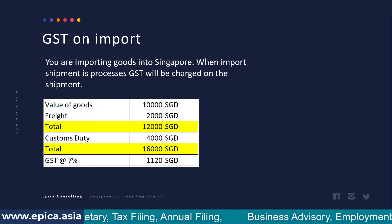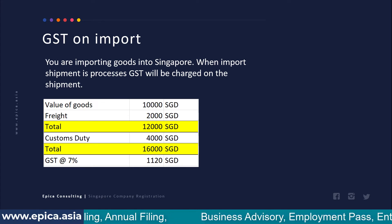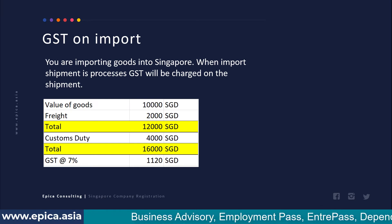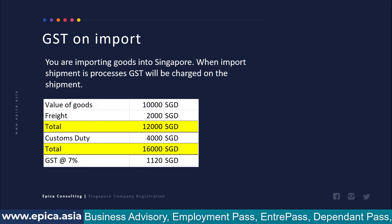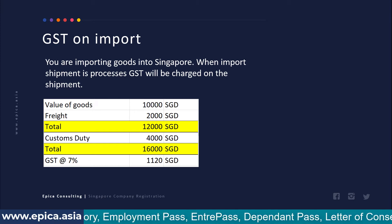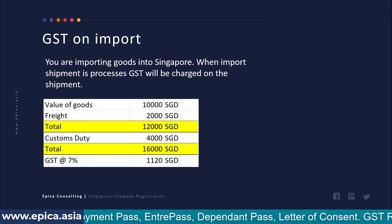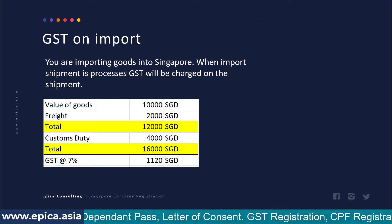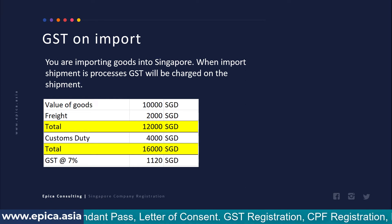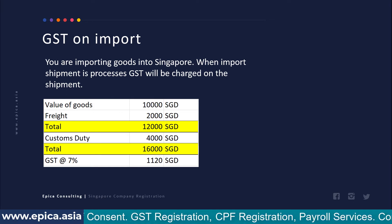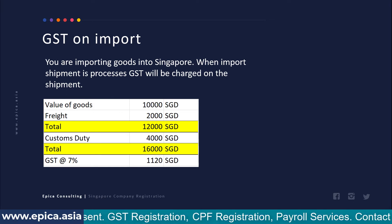GST is calculated on value plus freight plus customs plus insurance and any other direct expenses prior to landing of the goods. In most circumstances the logistics service provider you appoint will pay this GST on your behalf and then present you with the invoice so that you can claim back the input tax if you are a GST registered entity. You will need to deposit this money with the logistics service provider.